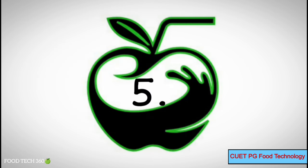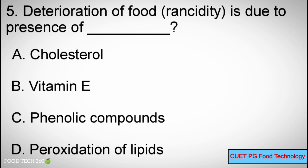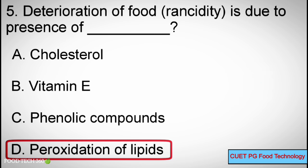Question number 5. Deterioration of food is due to presence of dash. Options: A. Cholesterol, B. Vitamin E, C. Phenolic compounds, D. Peroxidation of lipids. Correct answer: D. Peroxidation of lipids.